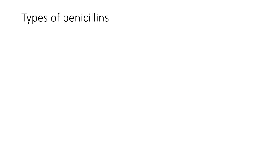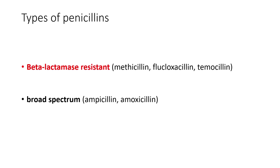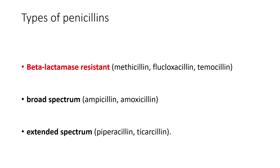Coming to the types of penicillins: we have beta-lactamase resistant penicillins — examples are methicillin, flucloxacillin, and temocillin. We have broad spectrum penicillins — examples are ampicillin and amoxicillin. Under extended spectrum penicillins, we have piperacillin and ticarcillin.